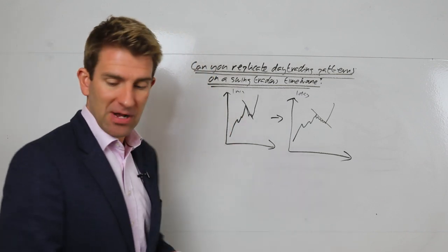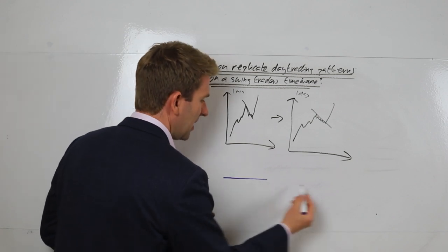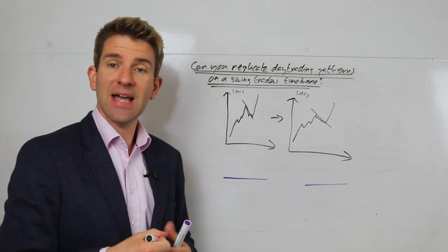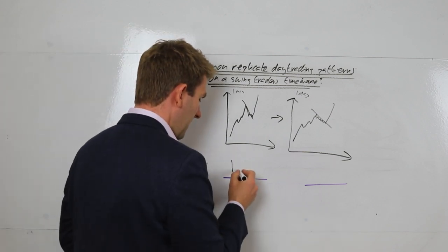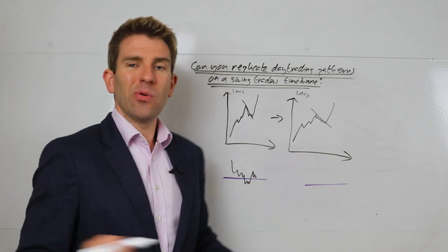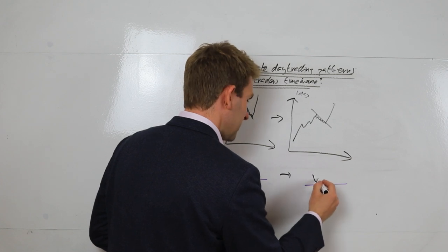So if we can imagine, if we can imagine on our one minute chart, a key level, and on our swing chart, a key level. If price comes down on a one minute chart and goes through the key level for a few minutes and comes back up, what difference is that compared to when we have the same thing here?